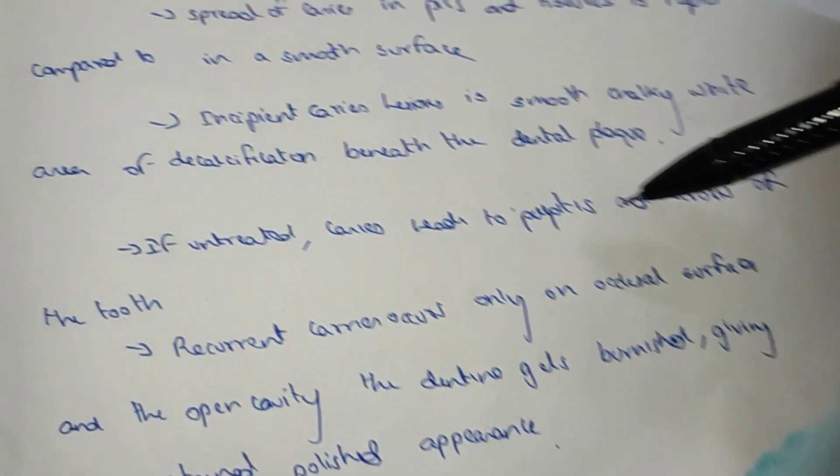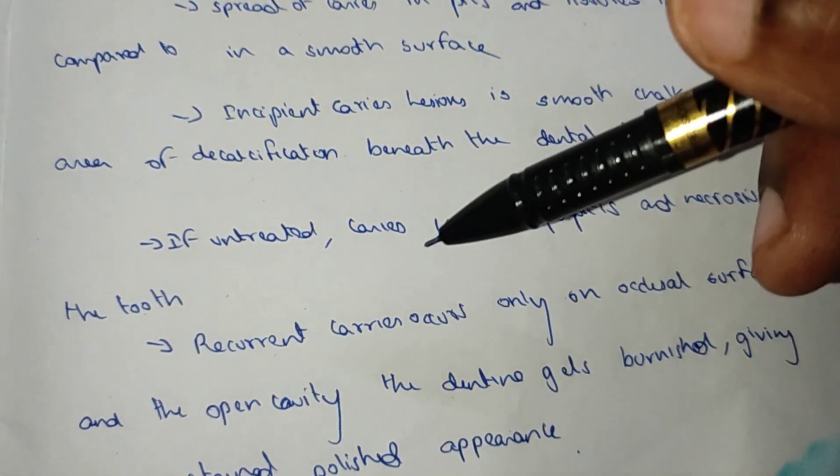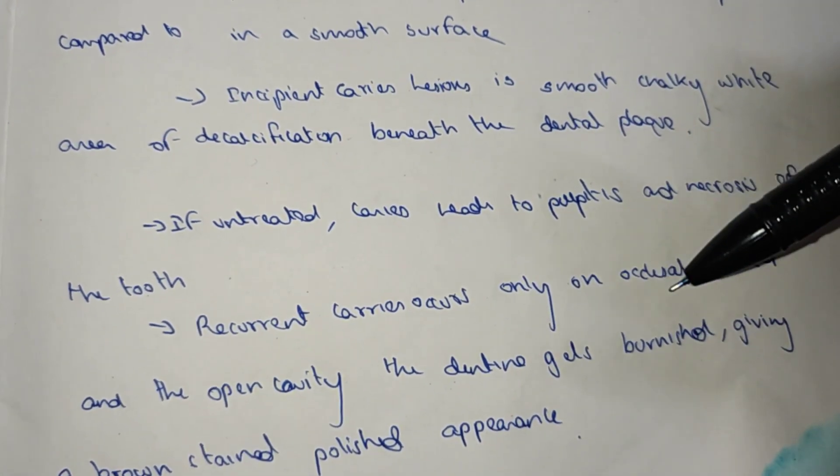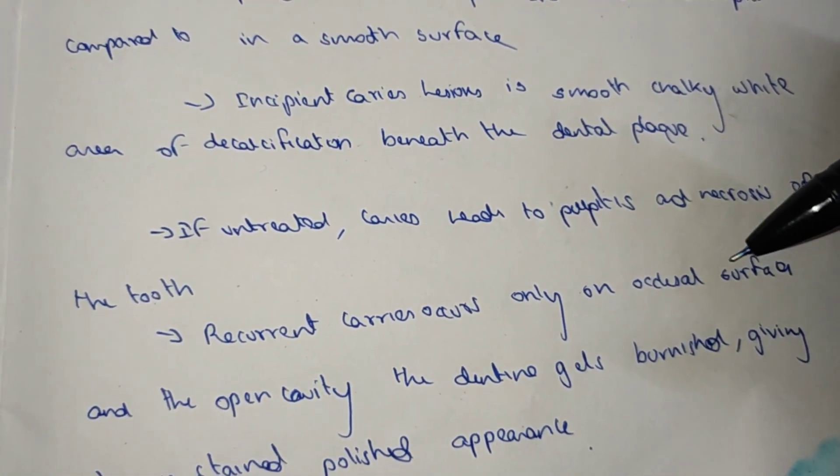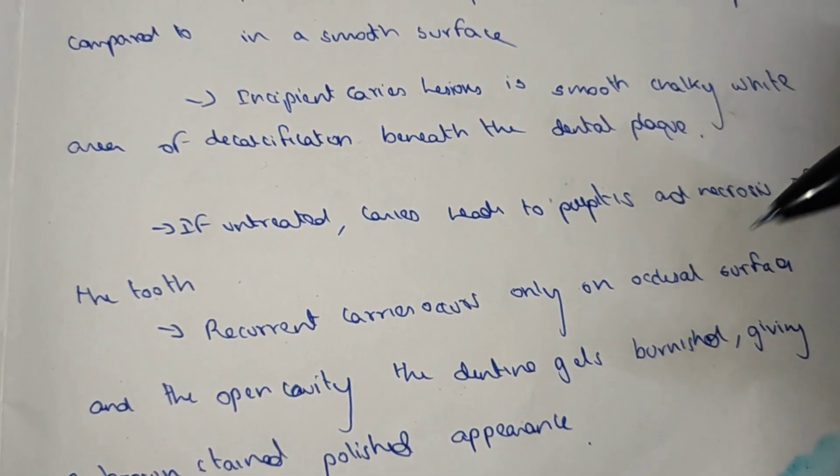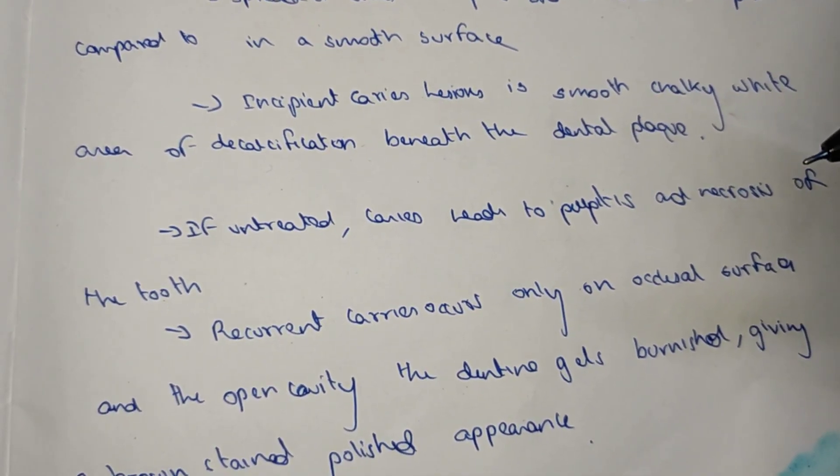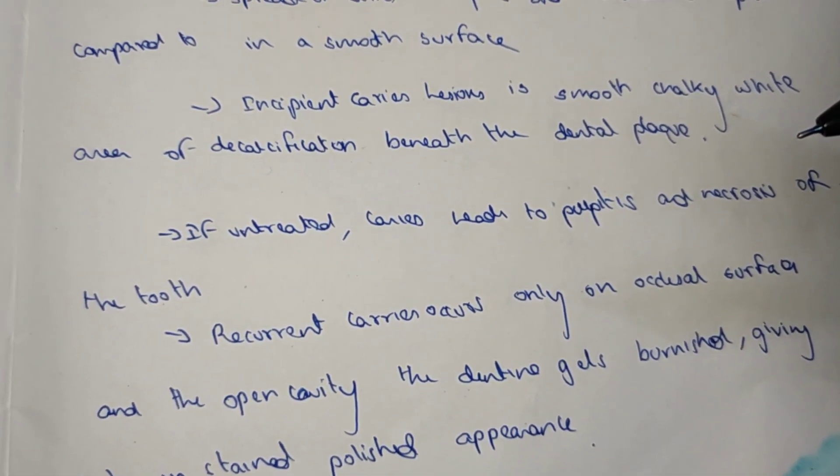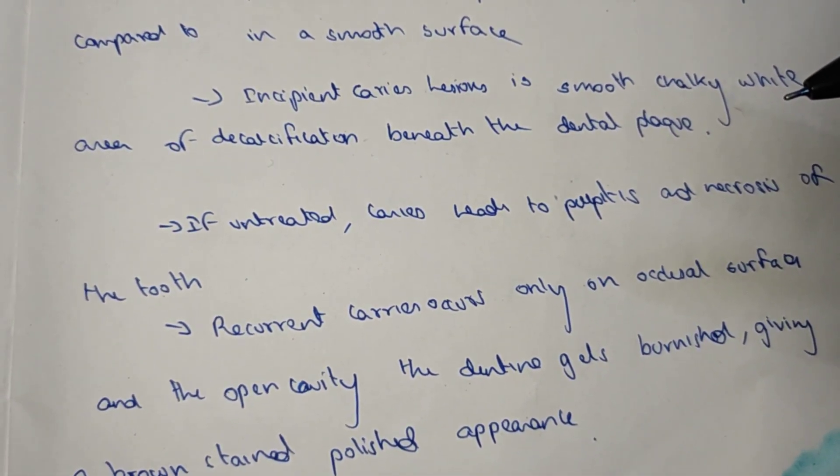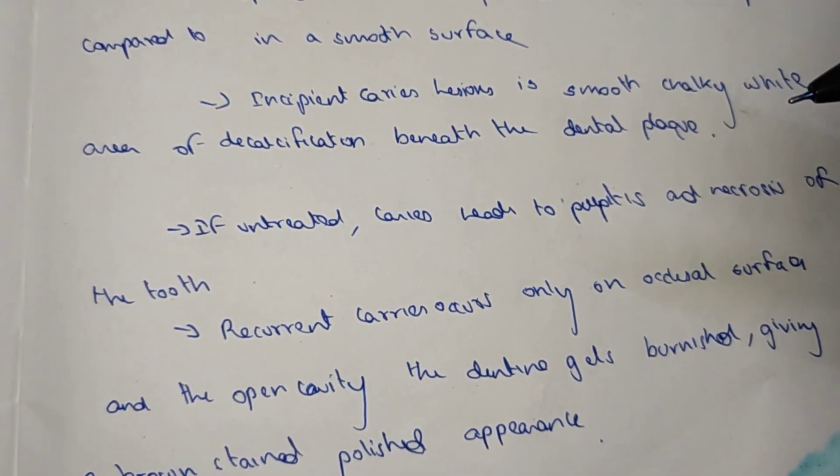Recurrent caries occurs on the occlusal surface and in open cavities. The dentine gets burnished and gives a brown stained polished appearance.